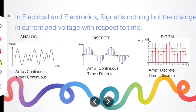The example for a discrete signal is cricket highlights. In cricket highlights, you can see only certain events — at a particular time interval, you see particular clippings. But by seeing the highlights, you can get an overall idea about the cricket event.